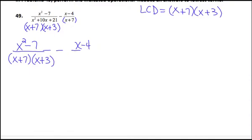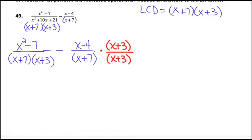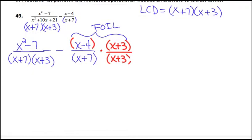The second fraction, x minus 4 over x plus 7, is missing x plus 3, so I multiply top and bottom by x plus 3. This is different from the last problem — the numerator is x minus 4, not a monomial. Don't cross off those x plus 3s — you just put them there. You have to FOIL these two: x times x is x squared, 3x minus 4x is minus x, and minus 4 times 3 is minus 12.